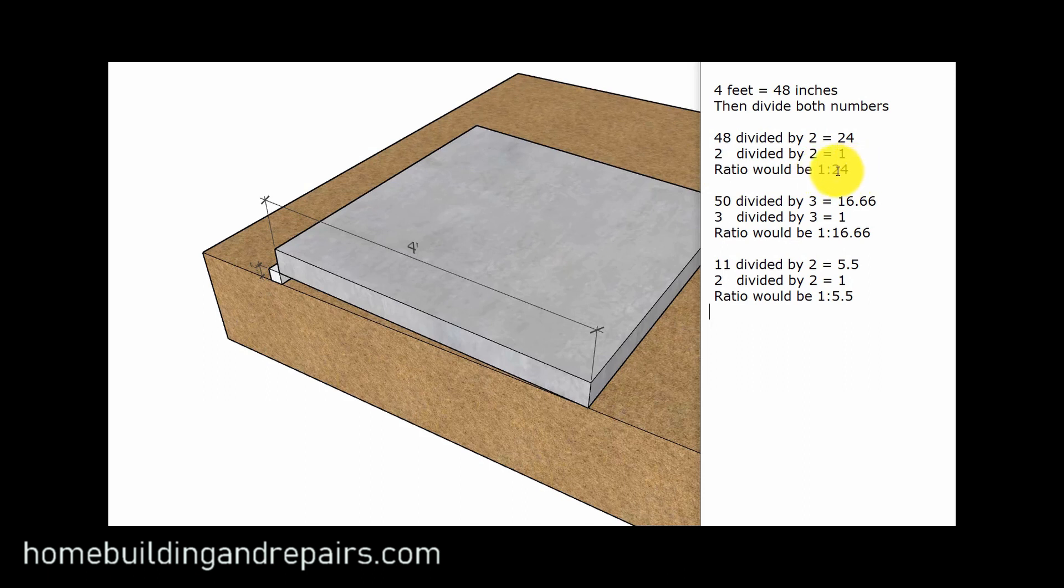So for every 24 units, which would be inches, it's going to rise 1 inch. And this should make sense to you because 24 is half of 48. And if we have a 2 inch overall rise at the end, then in the very middle, we should have half of this number, which would be 1 inch.